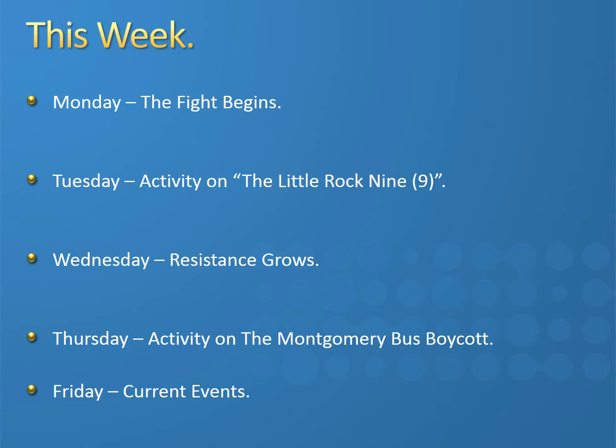On Tuesday, you'll have an activity on the Little Rock Nine — you'll get a chance to look at that and do a little writing. On Wednesday, you'll have another lesson on Resistance Grows, covering how the movement continued to grow and spread across the United States. On Thursday, there'll be an activity on the Montgomery Bus Boycott, where you'll learn about that event. And then on Friday, you'll have a current events assignment.